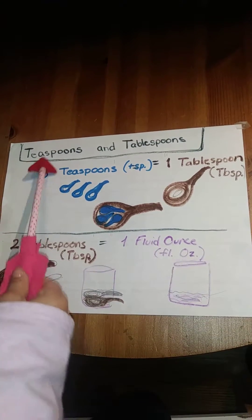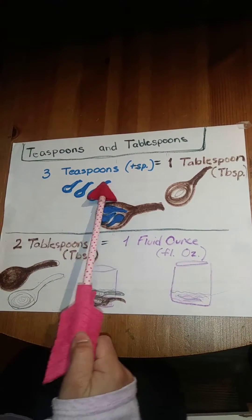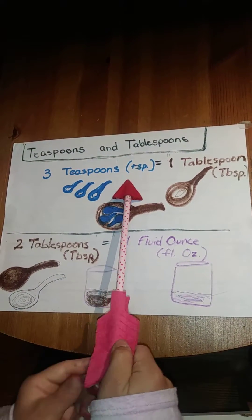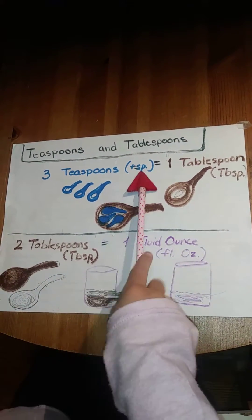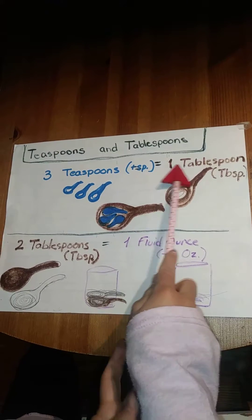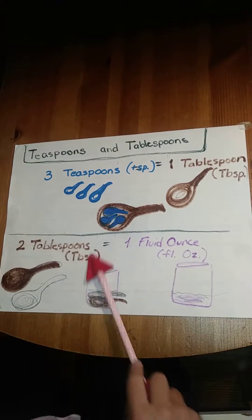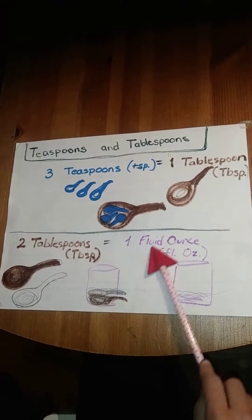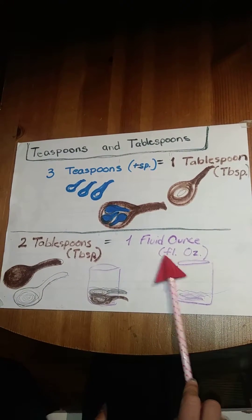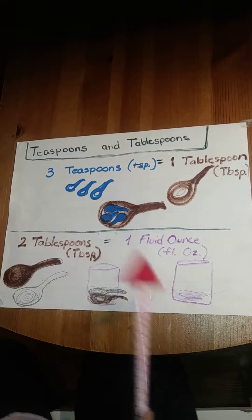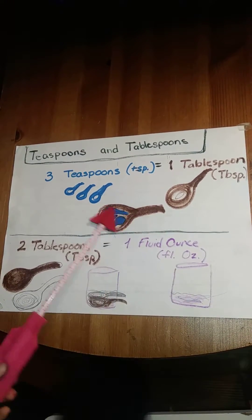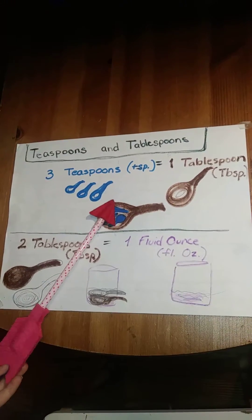Teaspoons and tablespoons. Three teaspoons equals one tablespoon. Two tablespoons equals one fluid ounce. One teaspoon, two tablespoons.